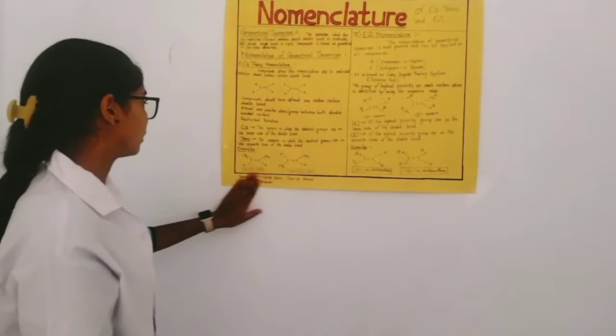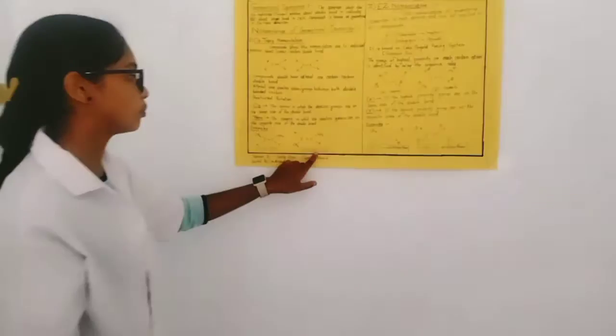The examples of the cis or trans is the cis-but-2-ene or trans-but-2-ene.